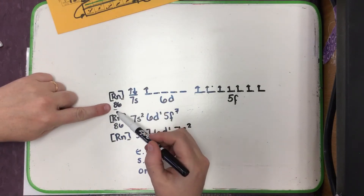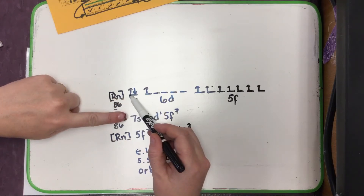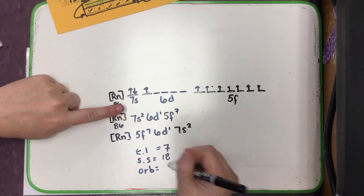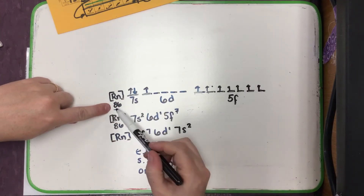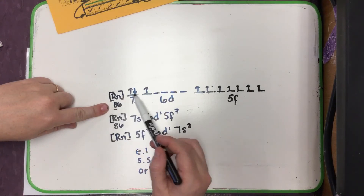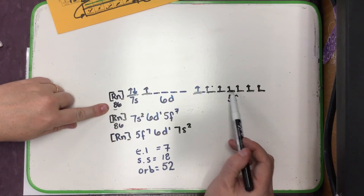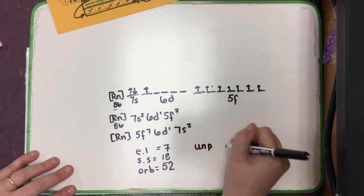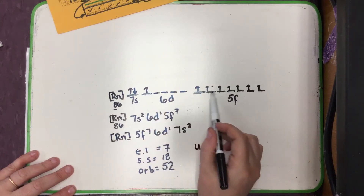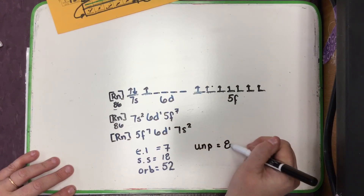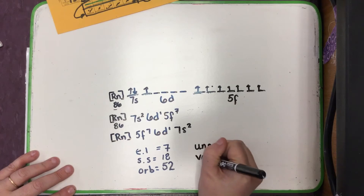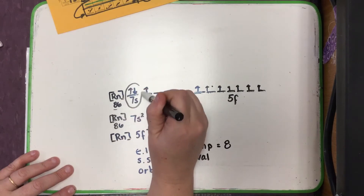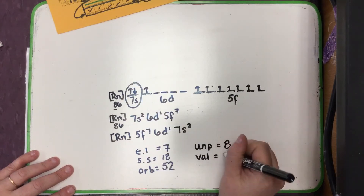For orbitals, we take our noble gas divided by 2: 86 divided by 2 is 43, and then counting the additional occupied orbitals gives us 52 total orbitals. We can look at our unpaired electrons and count 8 unpaired. For valence electrons, the biggest principal quantum number was 7, and there are just 2 electrons at that level — so curium has 2 valence electrons.